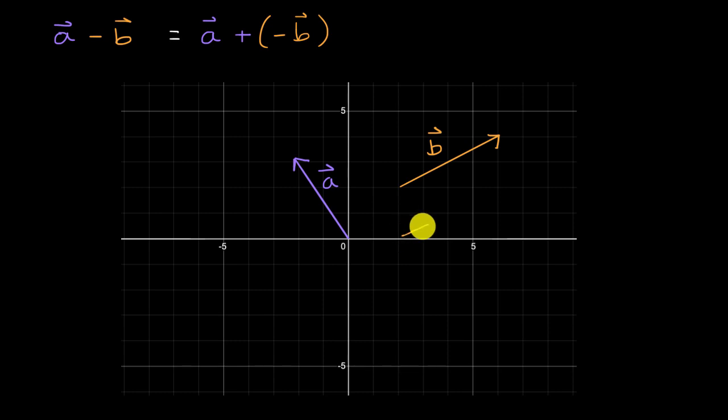For example, this vector right over here would be the vector negative b. Now, we just have to think about what is vector a plus the vector negative b.